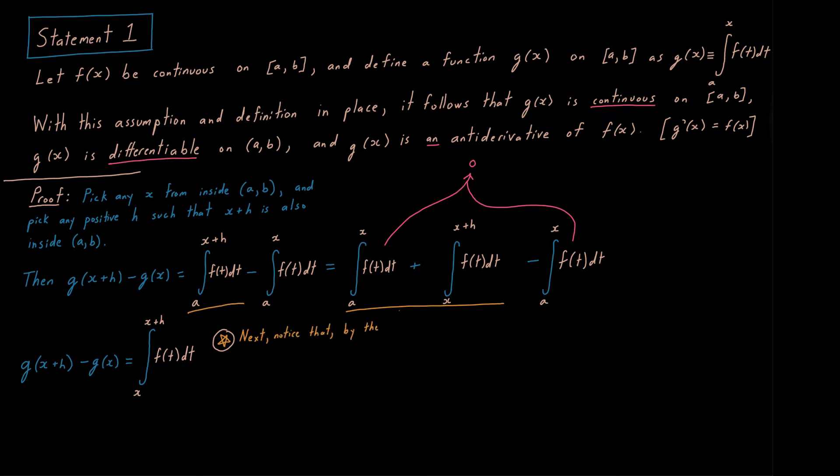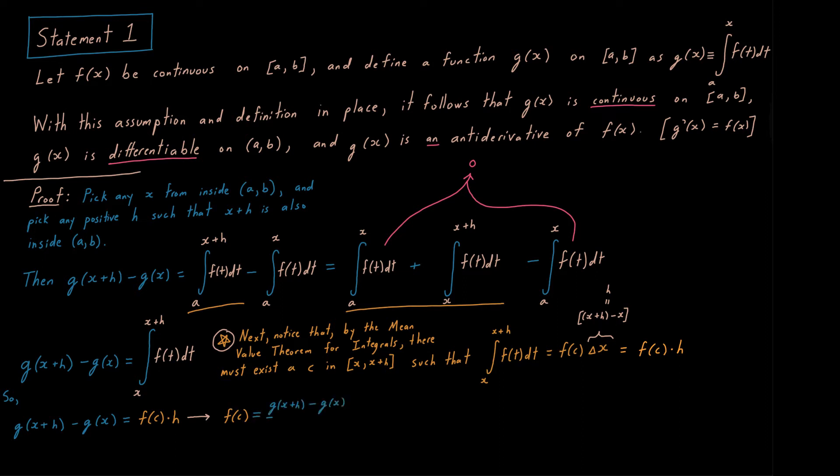Now, we're going to utilize that average value theorem for integrals, that very important theorem that's used all the time in physics and engineering. According to this theorem, there needs to exist some number c in the closed interval x to x plus h, such that the area under the curve from x to x plus h is the area of some rectangle whose height is f of c and whose width is delta x. And notice, delta x is just going to be h. In other words, g of x plus h minus g of x will be equal to f of that c value times h.